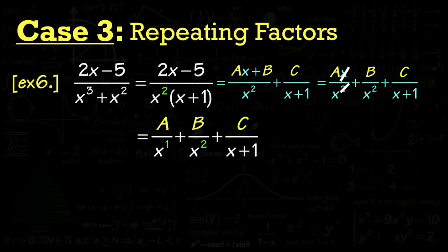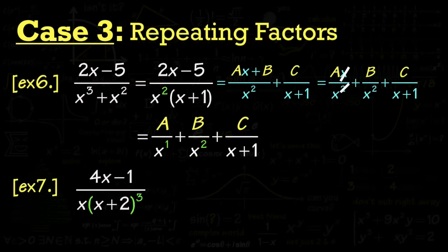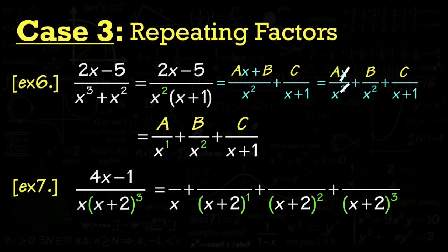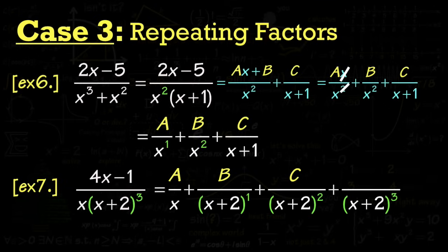Example seven: x plus 2 to the third power is a repeating factor — meaning (x+2)(x+2)(x+2). Build up the powers: a fraction with x on the bottom, then x plus 2 to the first, second, and third power. Since x plus 2 is linear, each numerator is a constant. So we get A over x, B over (x+2), C over (x+2) squared, and D over (x+2) cubed.